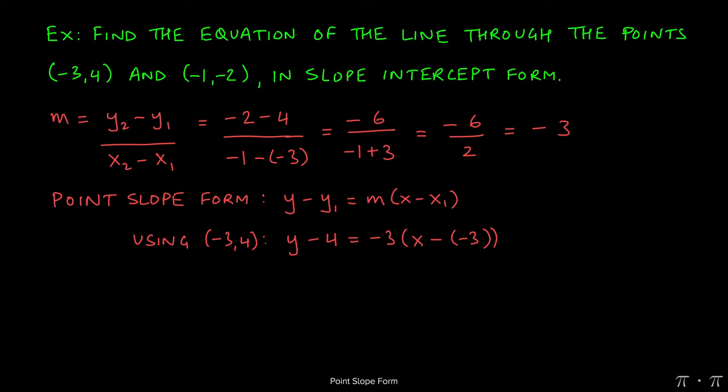So had we used (-3,4), the equation would become y minus y1, which is 4, equals m, which turned out to be -3, times the quantity x minus x1, which is -3. Negative times a negative makes it a positive, so we can simplify this to x plus 3 inside the parentheses on the right.